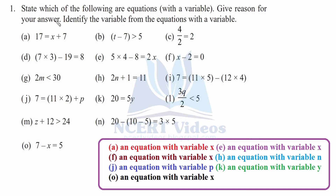Question one: state which of the following are equations with a variable — keep in mind, with a variable, not a numerical equation. Give reason for your answer and identify the variable from the equations with a variable. For part a, you can see it has an equal sign, therefore it is an equation with left hand side and right hand side, and there is a variable x. Therefore it is an equation with variable x.